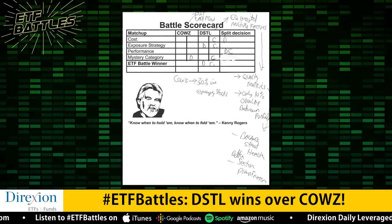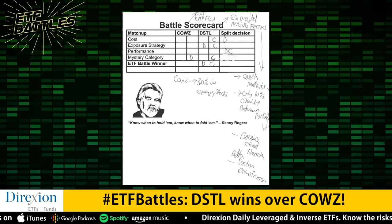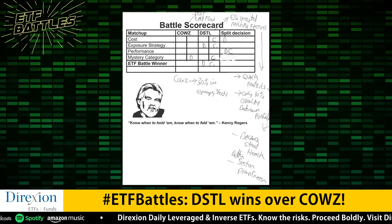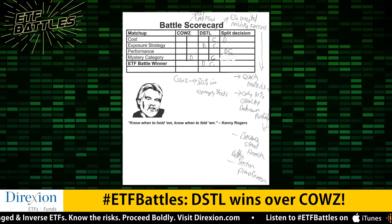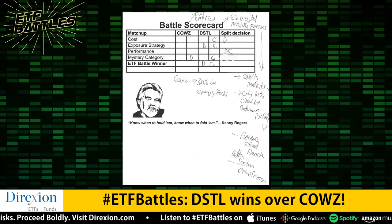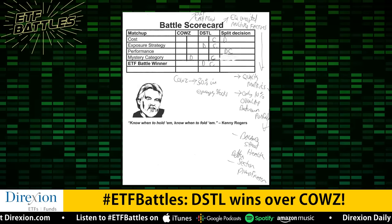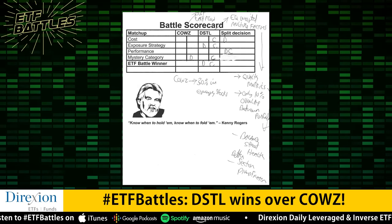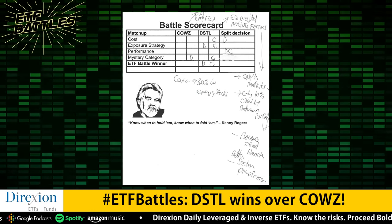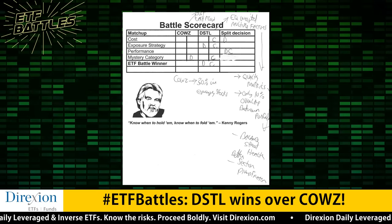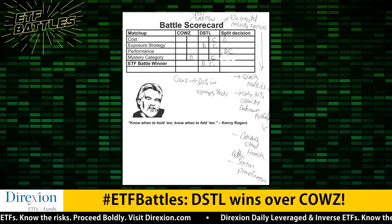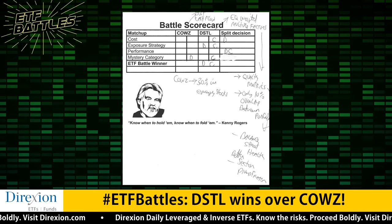Our judges have spoken. According to my battle scorecard, the winner for today's factor investing showdown is DSTL from Distillate. Our judges agreed on exposure strategy, had a split decision on performance, and had different takes on the mystery category and cost — but overall, DSTL won this battle. I think we uncovered a gem on today's show. Our judges liked DSTL's indexing strategy, pointing out it isn't just a one-trick pony focused on cash flow — it takes multiple factors including balance sheet health and other quality metrics. There's only 10% overlap between COWZ and DSTL.